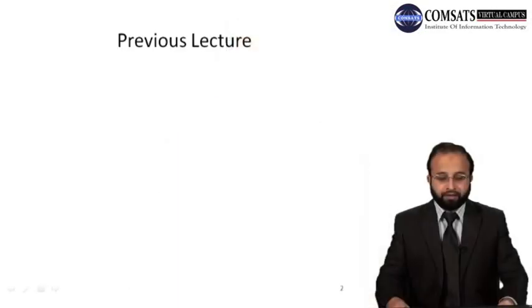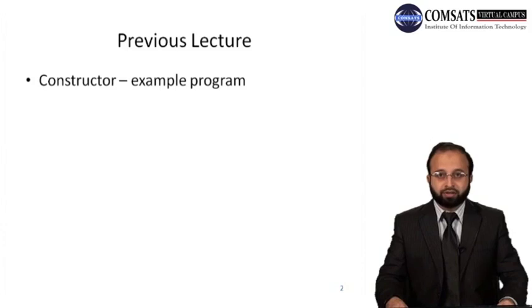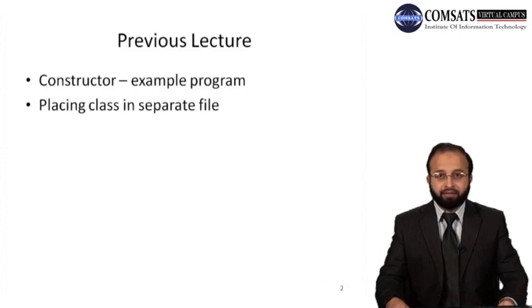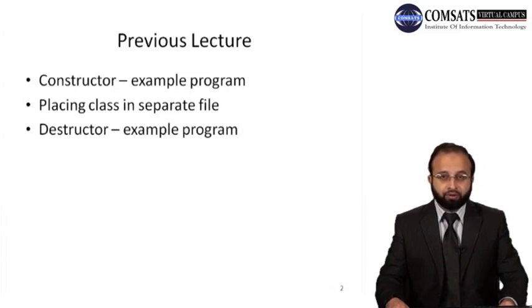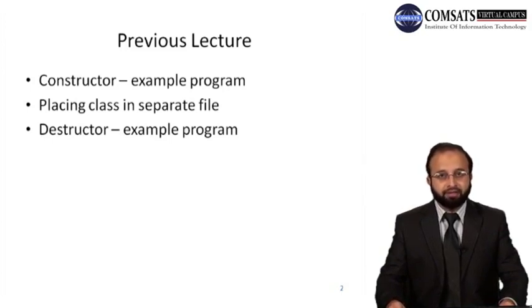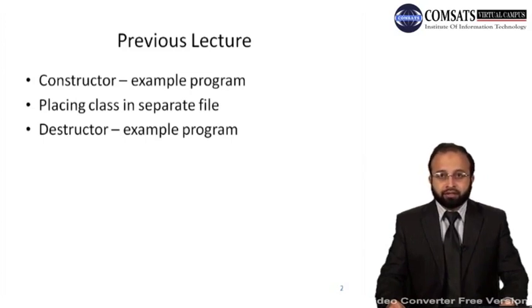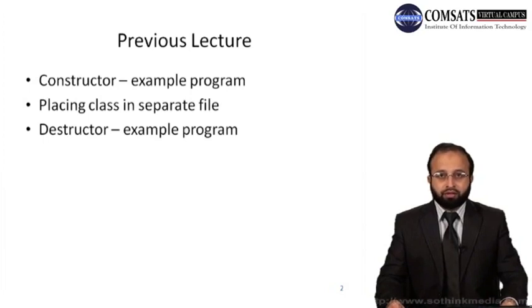Welcome to Lecture 4 of the course Object Oriented Programming. In the previous lecture we have seen what is a constructor — I showed you the example program placing the class in a separate file and the main function in a separate file, then creating the object of that class in the main function. We also saw the destructor: the constructor is called whenever the object is created, and the destructor is called whenever the object is destroyed — both are called implicitly, meaning automatically.